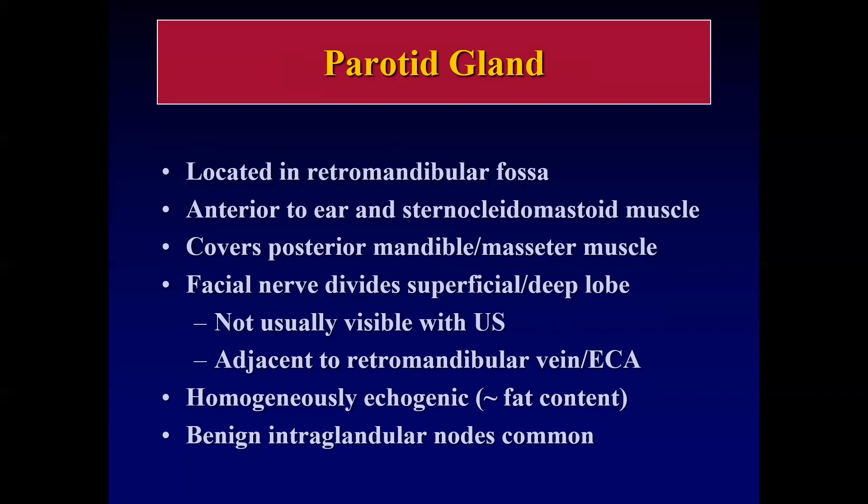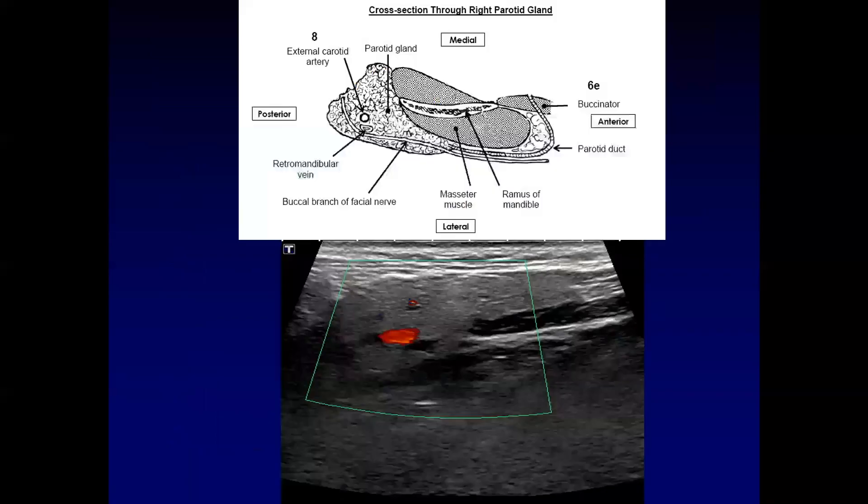The salivary glands are normally homogeneously echogenic, and the amount of echogenicity depends upon the fat content of the gland. It's also worth noting that benign intraglandular nodes are common with regard to the parotid gland.